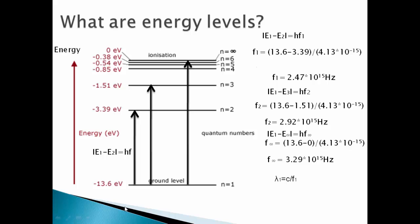Similarly we can find the wavelength by using the frequency value. Lambda 1 will be c by f1, so c velocity of light, 3 times 10 to the power 8, divided by the value of frequency and we get the wavelength as 1.21 times 10 to the power negative 7 hertz.